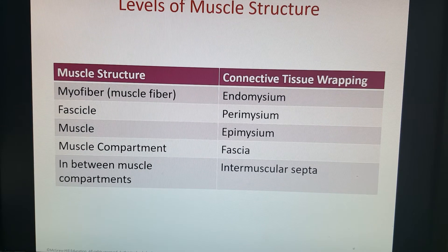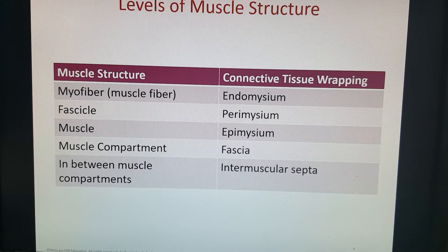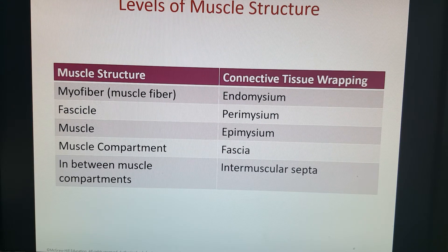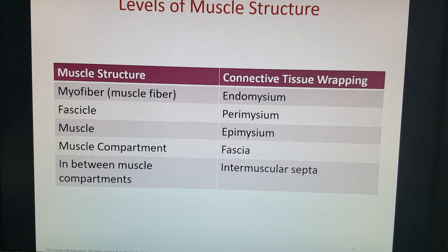For our muscle, we have different levels of structure and organization. Each of these levels has its own connective tissue that wraps around it. Starting at the smallest, we have a myofiber — this is our individual muscle fiber cell. The connective tissue that wraps around it is endomysium. Think of 'endo' as inside, just around the individual cell.